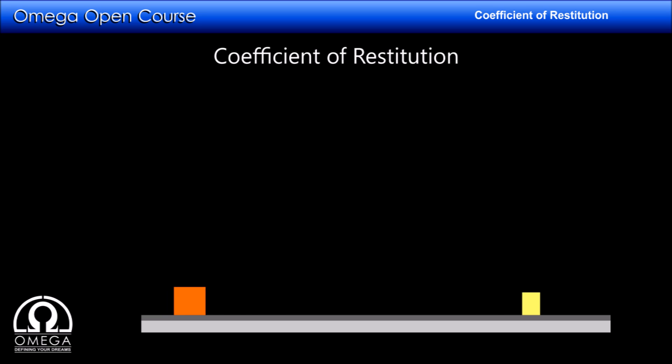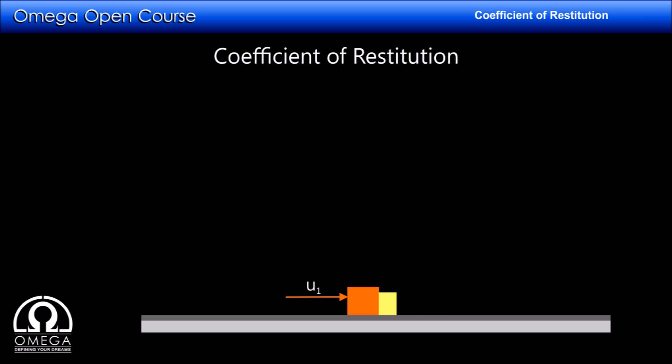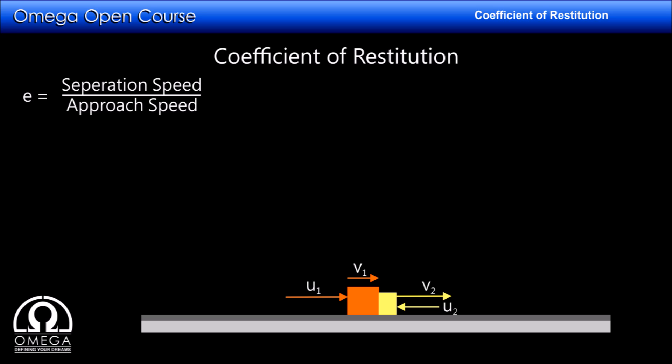Now consider the situation where two blocks moving towards each other collide head-on. The bigger block moves with speed u1 and the smaller ball with speed u2 before the collision. After the collision the bigger block moves with speed v1 and the smaller one with speed v2. The rate of separation is v2 minus v1 and the rate of approach was u1 plus u2, so the coefficient of restitution is (v2 − v1) divided by (u1 + u2).